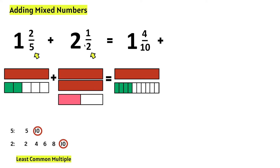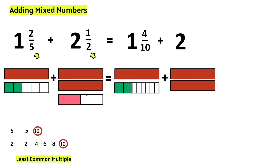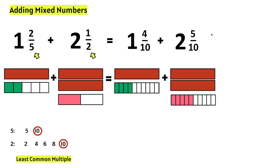Now let's add two and a half. We have two wholes and we need to convert this half into tenths, because we found the least common multiple of five and two is ten. Let's break this up into tenths and count how many tenths we have: one, two, three, four, five tenths. So two and a half is the same thing as two and five-tenths. And now we can go ahead and add.